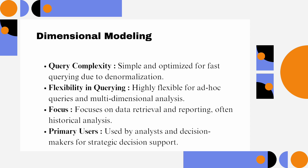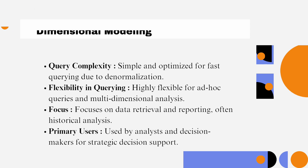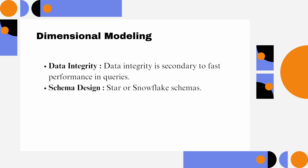Focus: The main focus is on simplifying data retrieval for reporting and analysis, often involving pre-aggregated data. Primary users: Used by business analysts and decision-makers who need to perform data analysis for strategic decisions. Data integrity: While data integrity is important, the focus is on providing fast query performance, even if it means some redundancy in the data. Schema design uses either a star schema or snowflake schema, both of which are easy to navigate and optimized for querying large data sets.